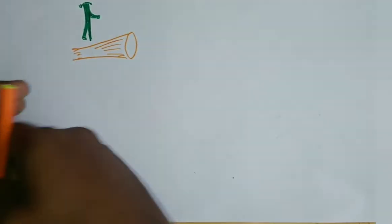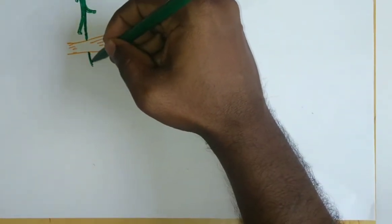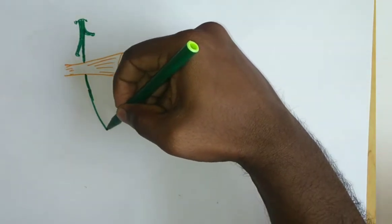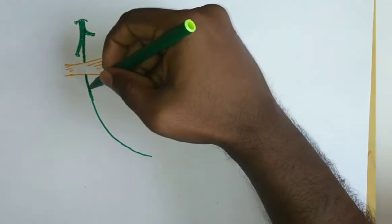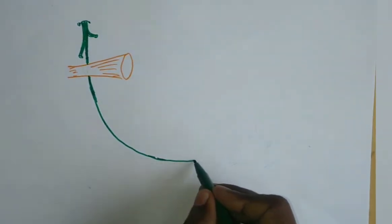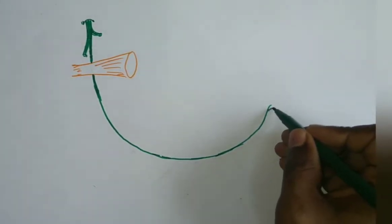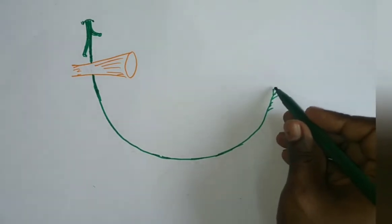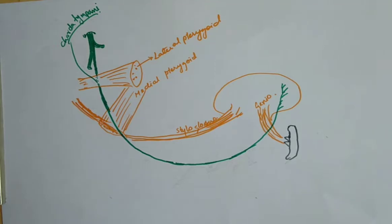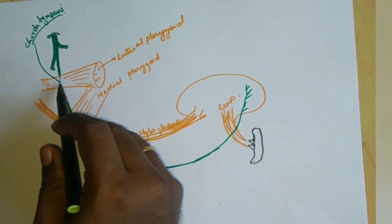Then the lingual nerve passes superficial to the medial pterygoid muscle, then it crosses the styloglossus muscle, then it is present on the hyoglossus muscle to enter inside the tongue — to supply the anterior two-thirds of the tongue. During its course, the initial part travels deep to the lateral pterygoid.